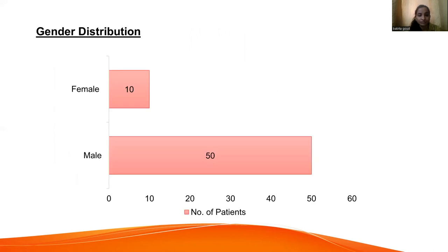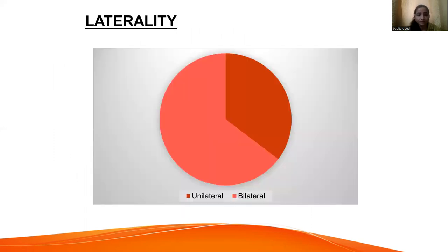Coming to gender distribution, males were more commonly affected than females. Out of 60 patients, 50 were male and 10 were female. Coming to laterality, bilateral AVN was more common compared to unilateral AVN.